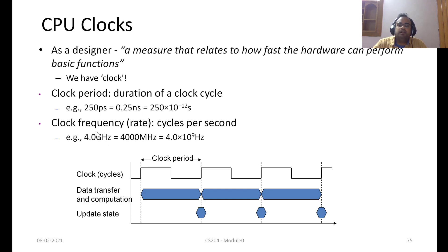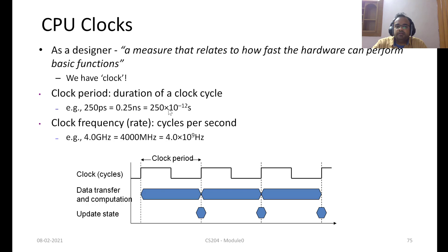The clock period would be given as typically 250 picoseconds, which is the same as 0.25 nanoseconds or 250 × 10⁻¹² seconds — the units vary but the actual value is the same. The inverse of the clock period is clock frequency, typically given as 4 gigahertz, 400 megahertz, or 4 × 10⁹ hertz. Similarly, the units vary but the actual value is still the same.